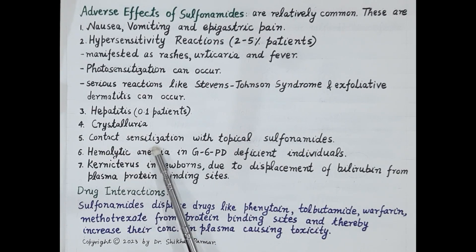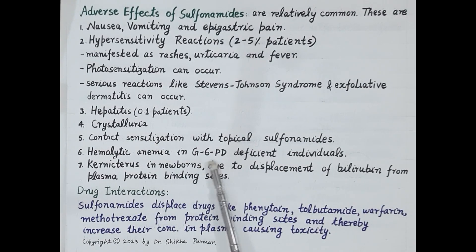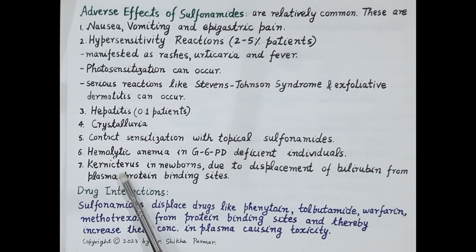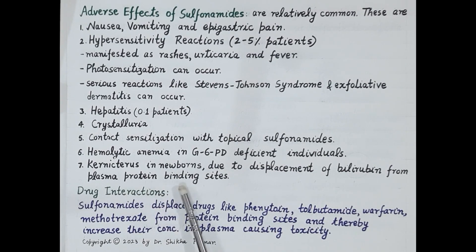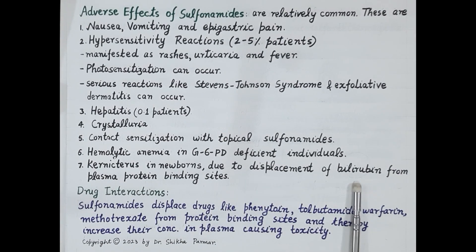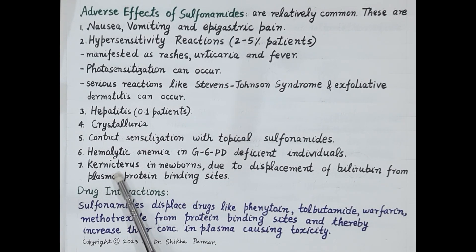Topical sulfonamides can cause contact sensitization. Hemolytic anemia can occur in glucose-6-phosphate dehydrogenase deficient individuals. Sulfonamides can cause kernicterus in newborns, especially premature babies. Since sulfonamides are highly protein bound, they displace bilirubin from plasma protein binding sites, causing free bilirubin to accumulate in the baby's blood, which then damages the brain — a condition termed kernicterus.